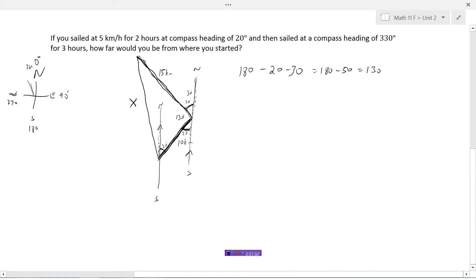So now I'm just going to draw this triangle again. We know this is 10. We know this is 15. We know this is 130. So this is a situation where we have two sides and the angle in between, and we're asked to find the opposite side. So this would now be a cosine law question.